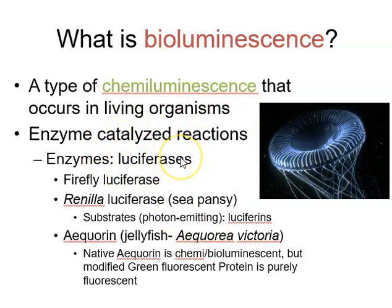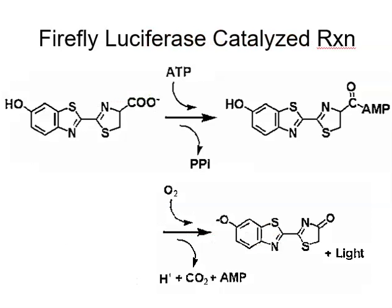Bioluminescence is a type of chemiluminescence driven by enzyme-catalysed reactions. The enzymes we deal with in biological systems are the luciferase enzymes, obtained from various sources: firefly, Renilla luciferase from the sea pansy, and jellyfish. Interestingly, the jellyfish — which is the source of green fluorescent protein — also has a bioluminescent system, where luminescence is picked up by its fluorescent proteins to emit light of different colours.